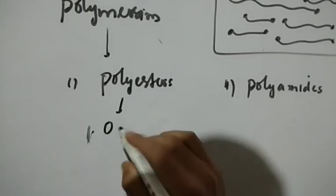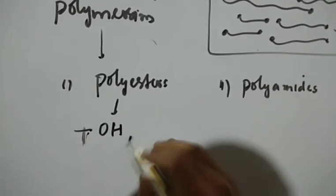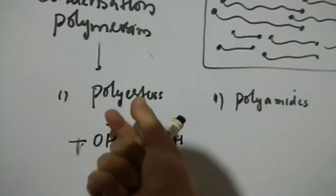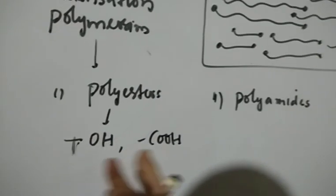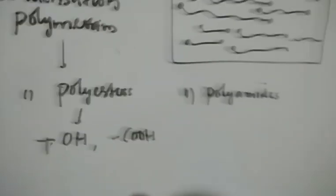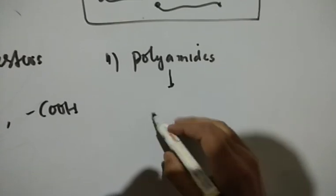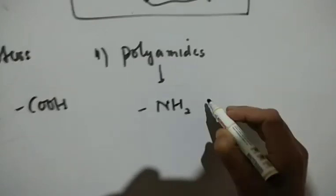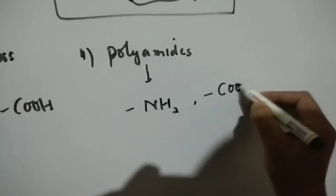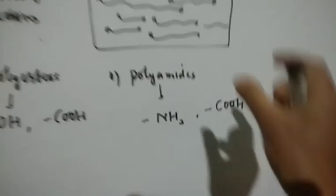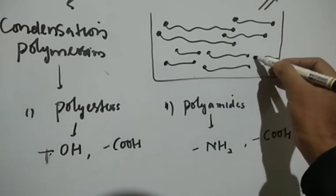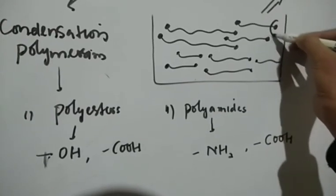Polyesters and polyamides are two major groups of condensation polymers. In polyester chains, the end groups are OH and carboxylic acid (COOH). In polyamide chains, the end groups are NH₂ or carboxylic acid. So polymers obtained through the condensation mechanism have these specific groups at the ends of their chains.